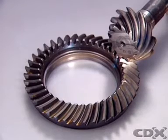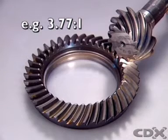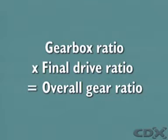A further reduction is always provided by the final drive gears. The ratio is included when calculating overall gear reduction. The overall gear ratio is the gearbox ratio multiplied by the final drive ratio.